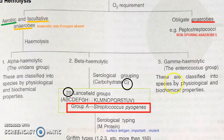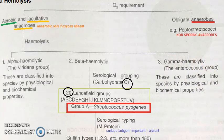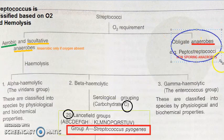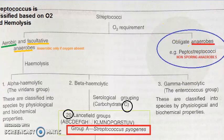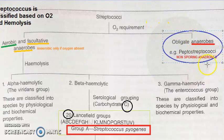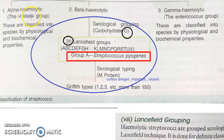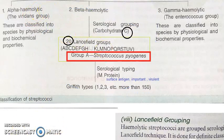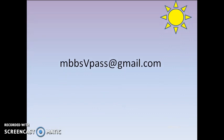Under gamma hemolytic you have the enterococcus group. Moving to obligate anaerobes, you have the non-sporing anaerobes — peptostreptococci — which are not very important at this stage. Currently the focus is on streptococcus pyogenes and its laboratory diagnosis.